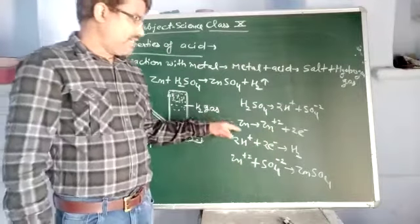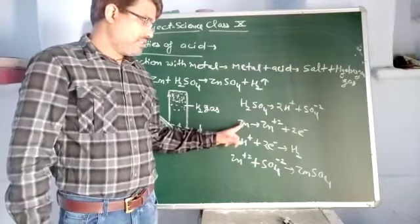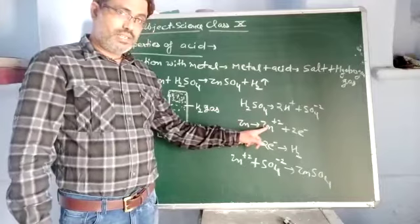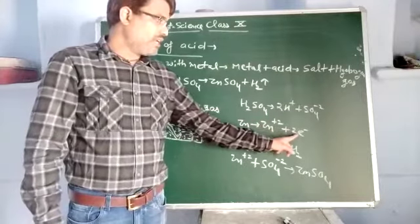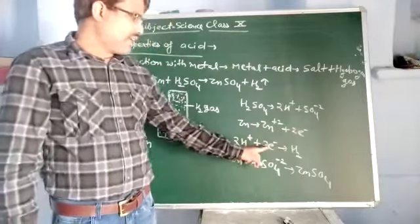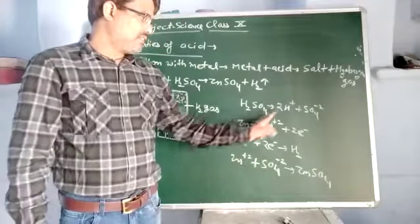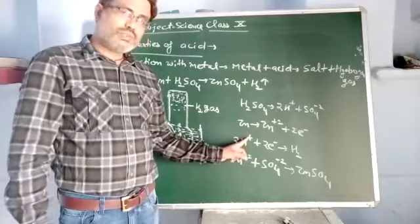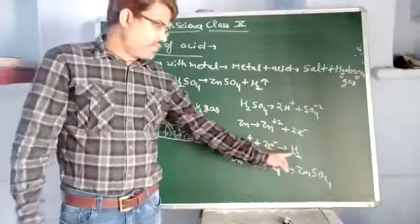And as zinc is reactive metal, zinc is oxidized. It means zinc is converted to Zn plus 2 and two electrons are released. Actually these electrons are taken by these two H plus ions. Because these are positive ions, they will gain electron and H2 gas is formed.